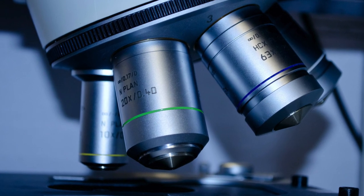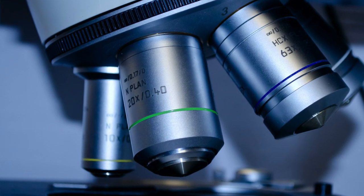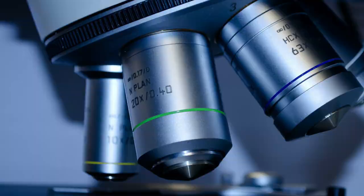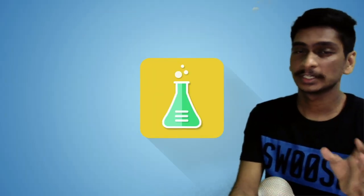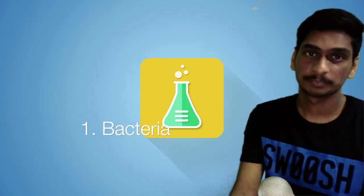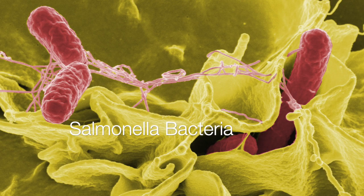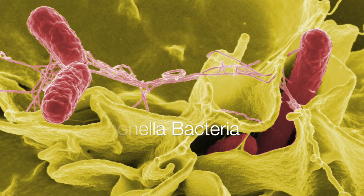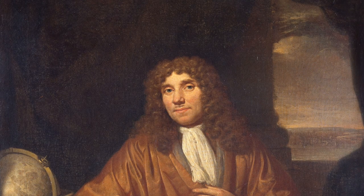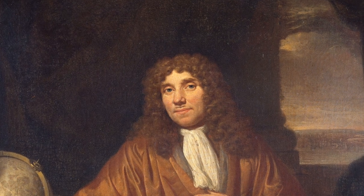So now these microbes are divided into four major groups: bacteria. Bacteria is the oldest known life form on earth and it was discovered by Antony van Leeuwenhoek when he was looking at the scrapings from a human mouth under a microscope.